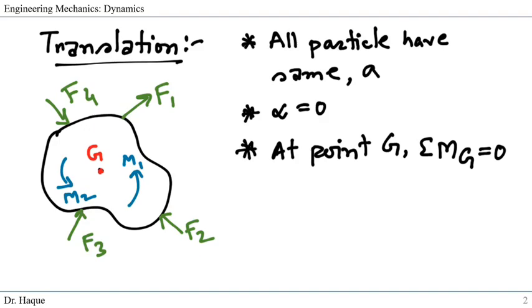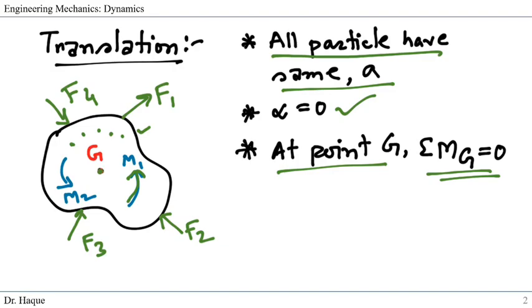We will assume that the body here doesn't have any rotation, just has a translation. So we'll assume all particles on the body have the same acceleration, and we'll assume there is no angular acceleration, and at the point G the sum of all the moments of the forces about this point G are zero.